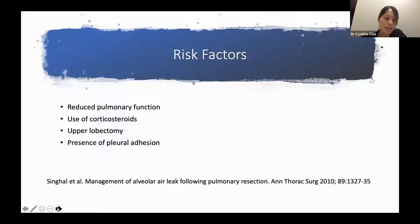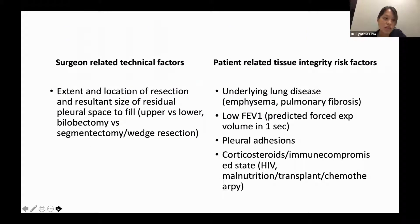Several studies have attempted to identify risk factors for persistent air leak after pulmonary resection. A review by Singh et al. summarized the different risk factors found in the literature — these include reduced pulmonary function, very common in COPD patients with emphysematous lungs, concomitant use of corticosteroids, upper lobectomy, and the presence of pleural adhesions. Other risk factors include surgeon-related technical factors, extent and location of resection, the residual pleural space, and patient tissue integrity, which can be compromised by emphysema, pulmonary fibrosis, low FEV1, adhesions, corticosteroid use, immunocompromise, malnutrition, or chemotherapy.